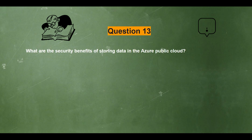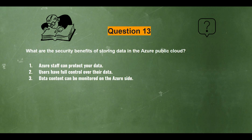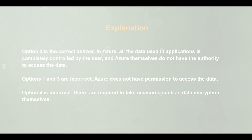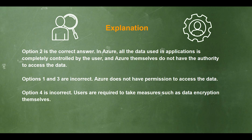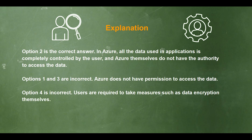Question 13. What are the security benefits of storing data in the Azure public cloud? Options: 1) Azure staff can protect your data, 2) Users have full control over their data, 3) Data content can be monitored on the Azure side, 4) Protection is automatically implemented without users needing to manage their own security measures. The correct answer is option 2. In Azure, all data used in applications is completely controlled by the user, and Azure themselves do not have the authority to access the data. Option 4 is incorrect — users are required to take measures such as data encryption themselves.